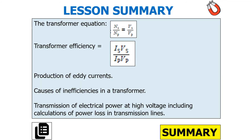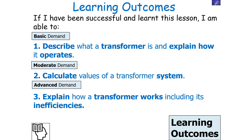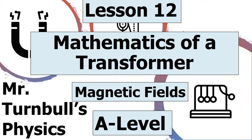In today's lesson, we've looked at the transformer equation: NS over NP equals VS over VP. This links to our previous lesson covering transformer efficiency, the production of eddy currents, causes of inefficiency, and the transmission of electrical power at high voltage, including calculations of power loss in transmission lines. We can now describe and explain how a transformer operates, calculate values of a transformer system, and explain its inefficiencies. Thank you very much for listening, and have a lovely day.